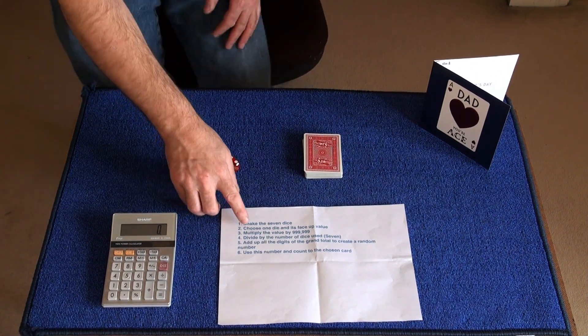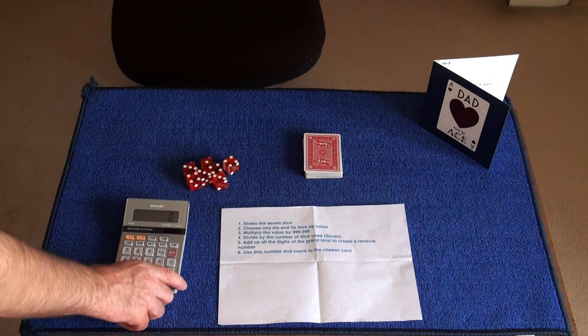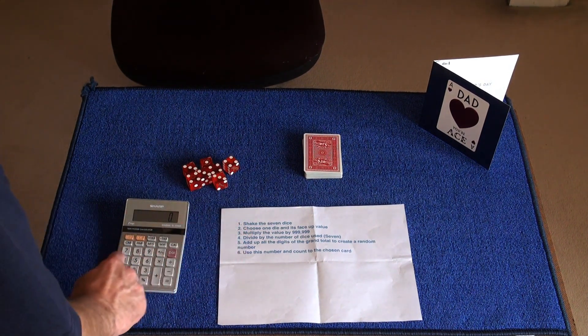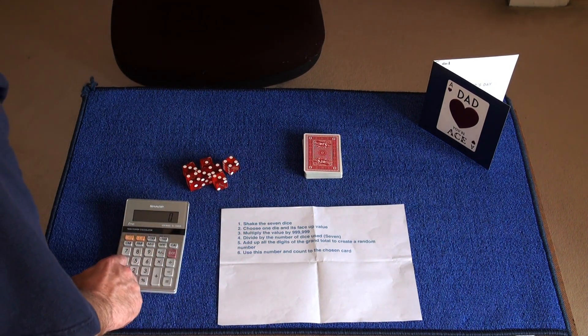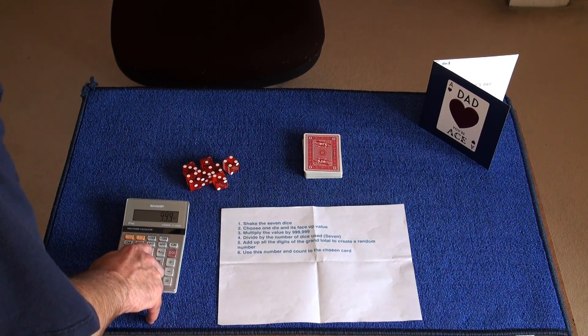This is step three: multiply the value by 999,999. So we'll multiply, we'll take the four and multiply by 999,999.